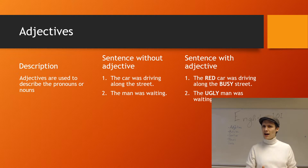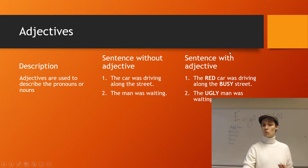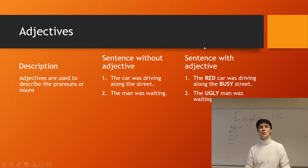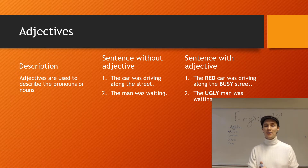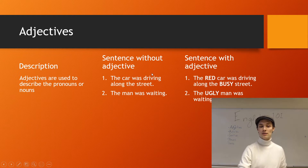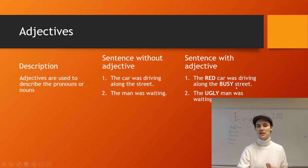How do you add an adjective? Look at this one here — sentence with adjective: 'The red car was driving along the busy street.' We've added words to describe our two nouns in the sentence. We have the car, and we're saying it's red, and then we have the street, and we're saying that it's busy.